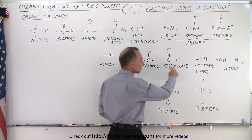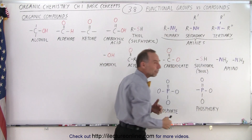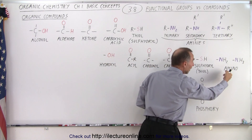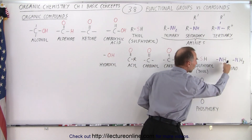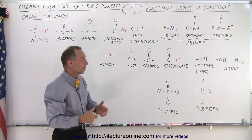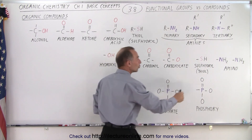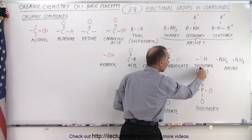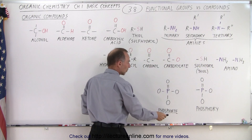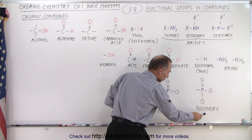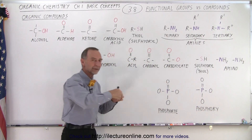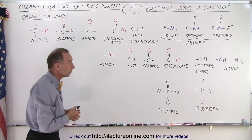You'll see that these names appear a lot in the molecules that they form. For example, we know what amino acids are, and so they have what we call the amino group, and that is where the name comes from. We also use sulfhydryl, which will form thiols, and notice we have what we call the phosphate group and the phosphoryl group, and notice that those names will also appear in the compounds that they form.